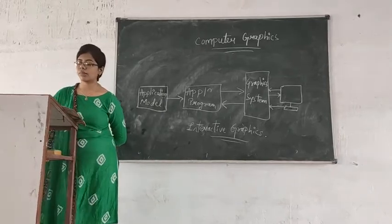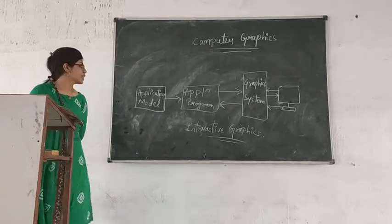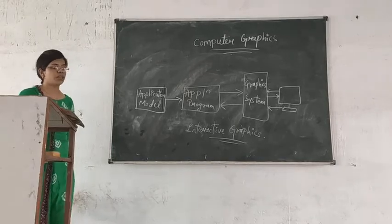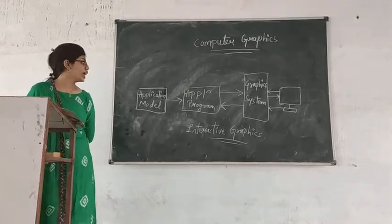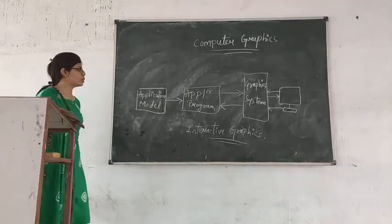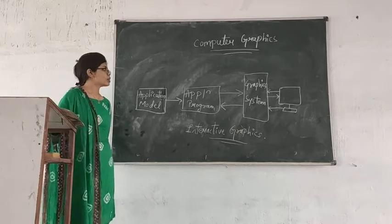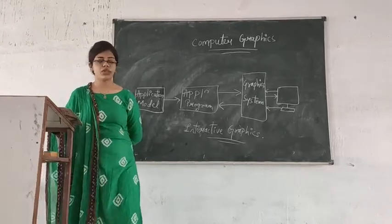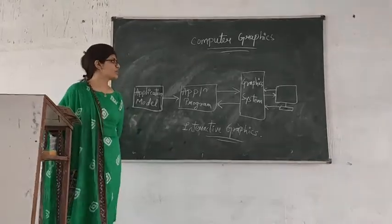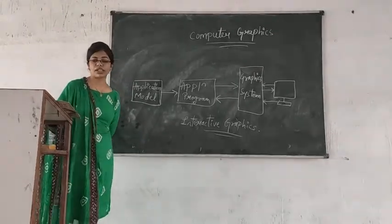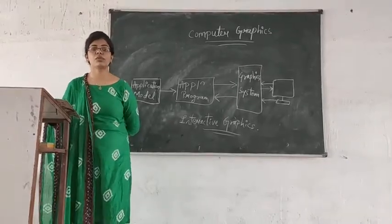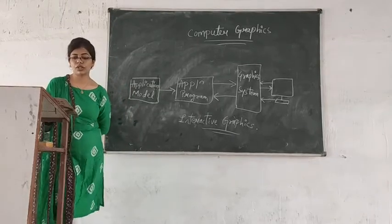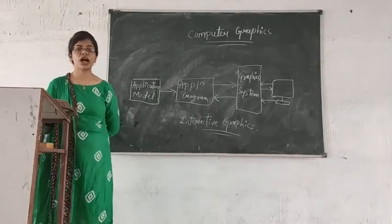Computer Graphics is used in many applications. As you can see, you have an application model and pictures. You take the model and convert it into an application program, after which you implement the software. Then the computer will provide the output.